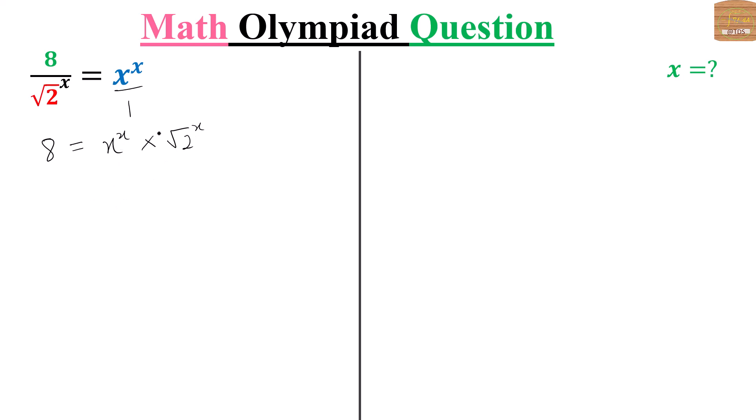In case you have a to the power x times b to the power x, this is the same as a times b to the power x. So we have this.